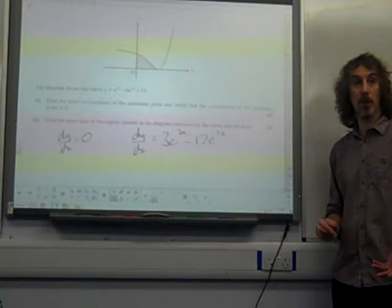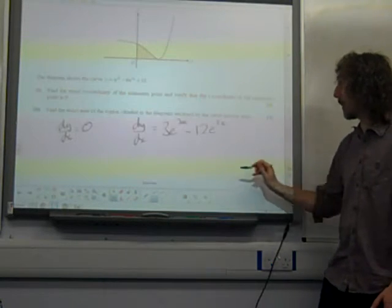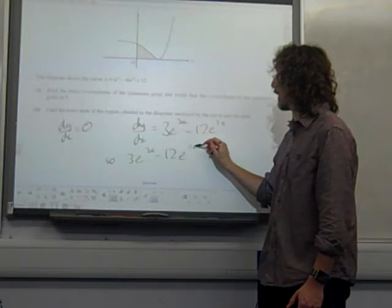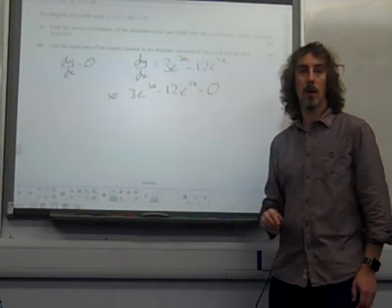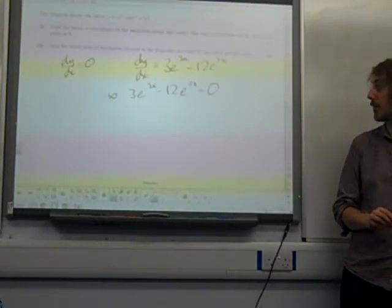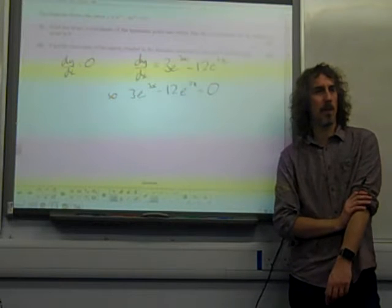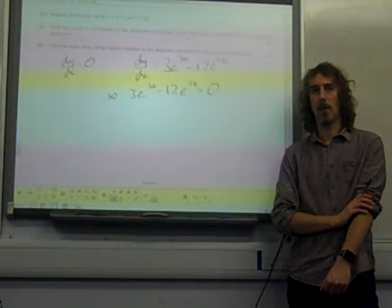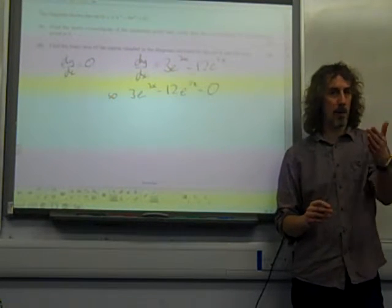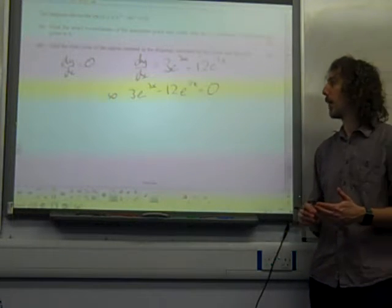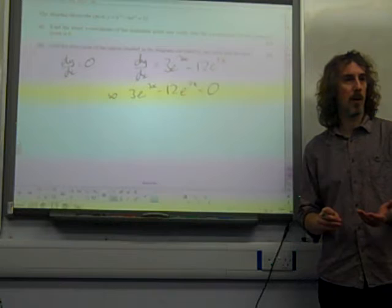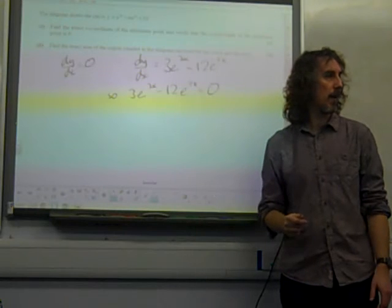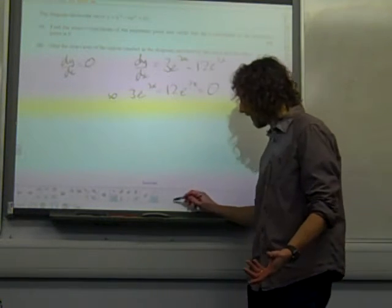We want to find the x-coordinate of the minimum point, so we want to know when this is 0. So if dy/dx is 0, 3e^(3x) - 12e^(2x) equals 0. Now, this is an interesting bit, because we've got to be careful how we solve these kind of equations, haven't we? To start with, this isn't correct.